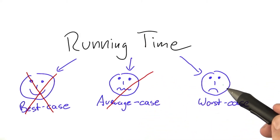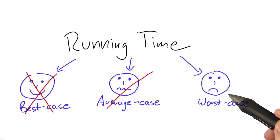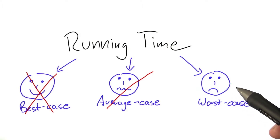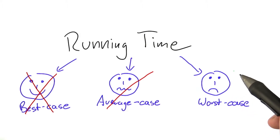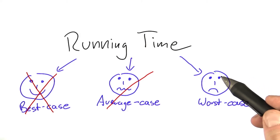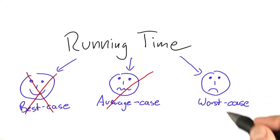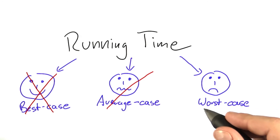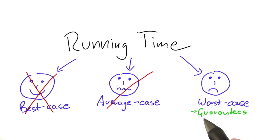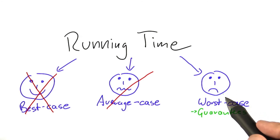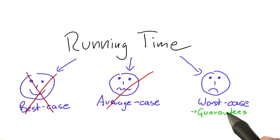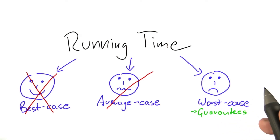Now, worst case analysis, where we always assume that the algorithm receives an input that makes it run as long as possible, might seem a bit pessimistic. It's almost like we had a mean adversary who was trying to give us the worst possible inputs. But on the other hand, the advantage of worst case analysis is that it offers guarantees. When we take a worst case view, we know that our algorithm will not run longer than the worst case analysis suggests, no matter what happens. And this is actually what we're interested in in this course.